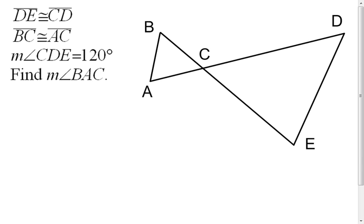I'm going to take that given information and mark it. It tells me that segment DE and segment CD are congruent, so mark those. They may or may not look congruent, but we're going to go by what it tells us and not by what it looks like. We know that segment BC and segment AC are congruent.